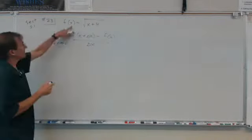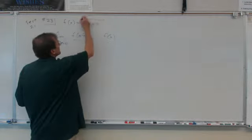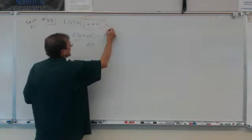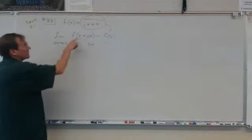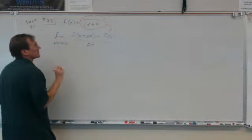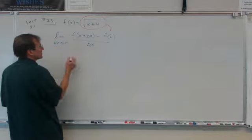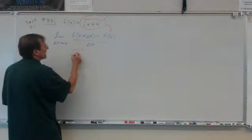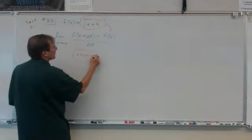So this is f of x and that obviously is going to go right in here. That's going to be f of x. And then f of x plus delta x, you're just going to put an x plus delta x where the x is in here. So it's going to be root x plus delta x plus 4.